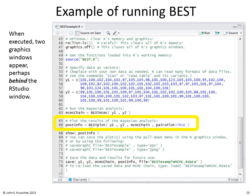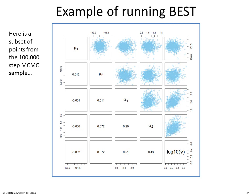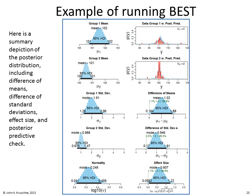The next line displays graphics that summarize the posterior distribution. When this line is executed, two graphics windows appear, perhaps behind the RStudio window. One graphic shows a subset of points from the one hundred thousand step MCMC sample as pair plots of the five parameters being estimated. The second graphic shows a summary of the posterior distribution, including the difference of means, the difference of standard deviations, the effect size, and the posterior predictive check.